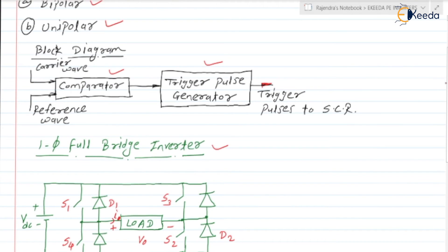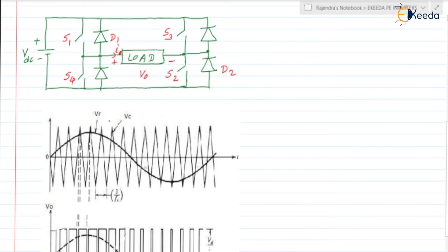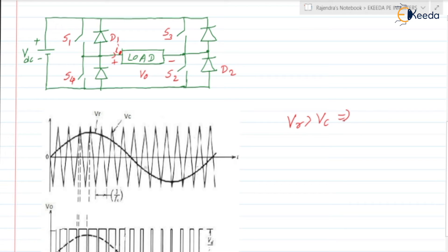In the Bipolar Sinusoidal Pulse Width Modulation Technique, we are using two signals: one is the Carrier Wave, which is a triangular wave, and the reference wave is a sinusoidal wave. If the magnitude of the reference wave VR is greater than the carrier wave VC, then we are going to trigger switches S1 and S2.